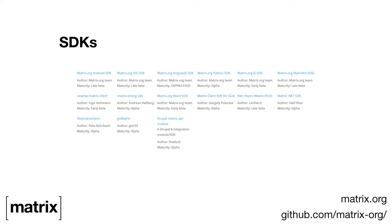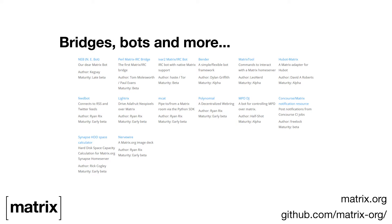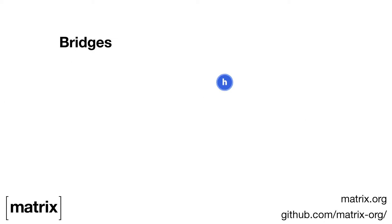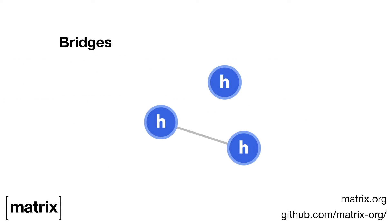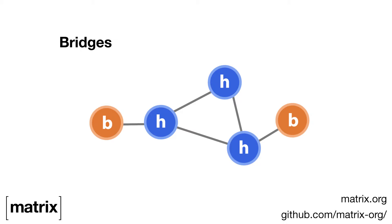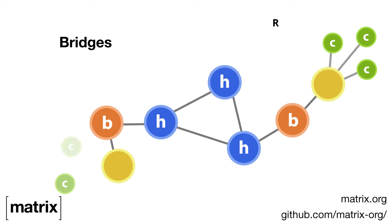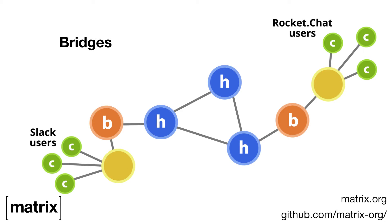The common factor of all these apps is that they can all talk to each other. We also extend the network into existing services via bridges, which means, for example, that a user on Slack can talk to a user on RocketChat via Matrix, without realizing or needing to realize it.